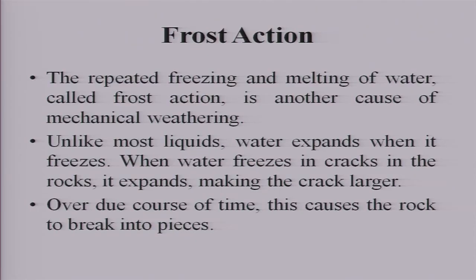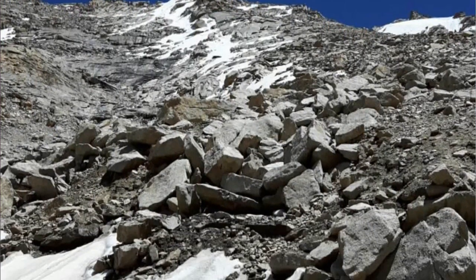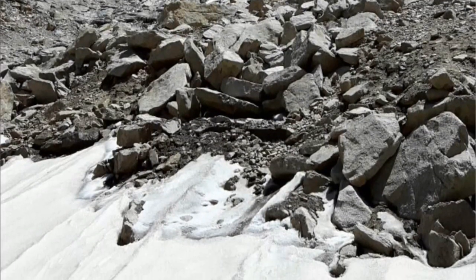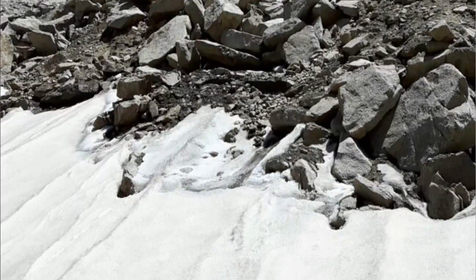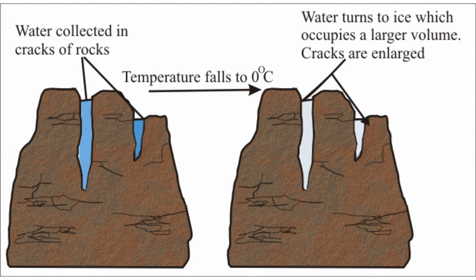The second cause is frost action. Ice has more volume than water — if water enters a rock and because of cold conditions it becomes ice, it increases in volume. When this increase in volume causes stress, and when the ice melts there is a release of tension. This continued action of freezing and thawing results in breakdown of rocks. You can see in this diagram: on the top layer there is freezing, which causes expansion; when it melts it contracts. This repeated expansion and contraction results in the breakdown of rocks.